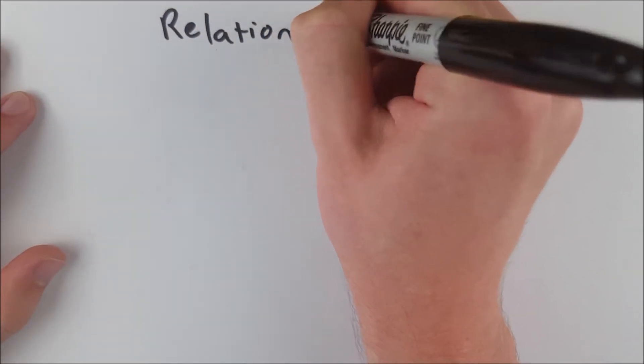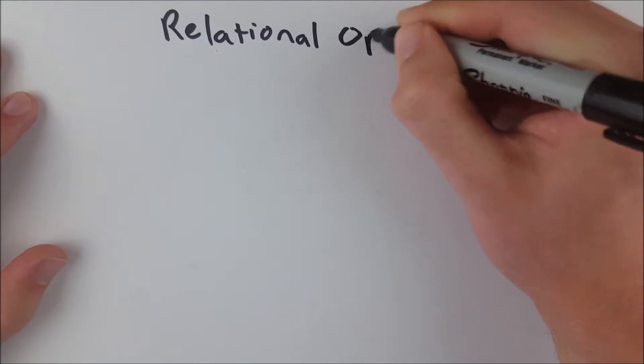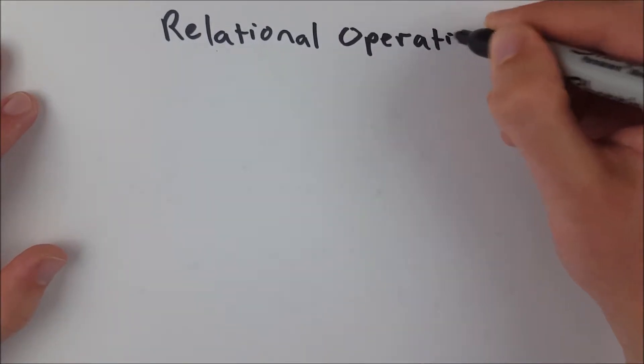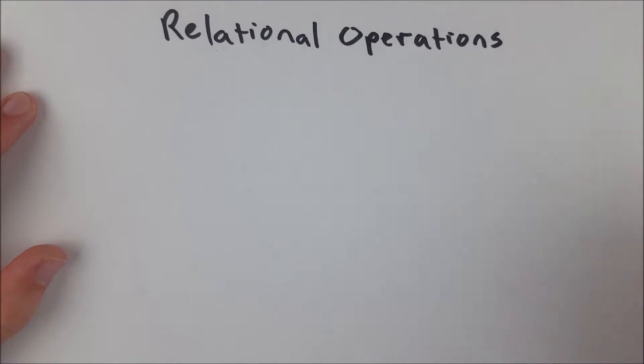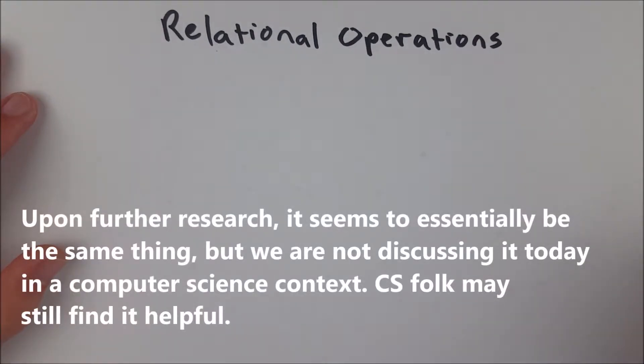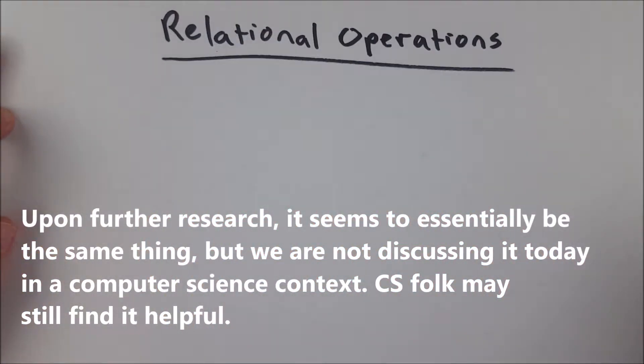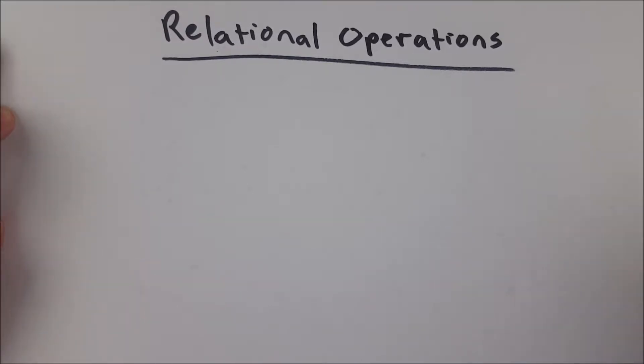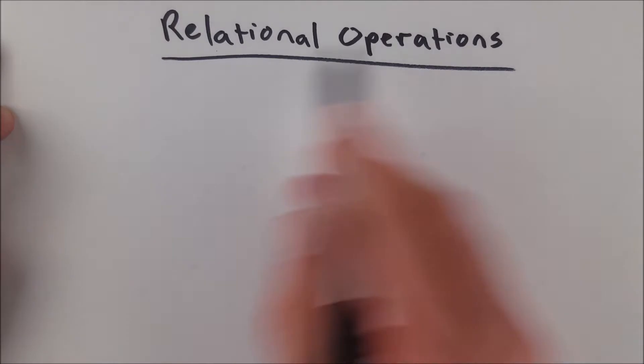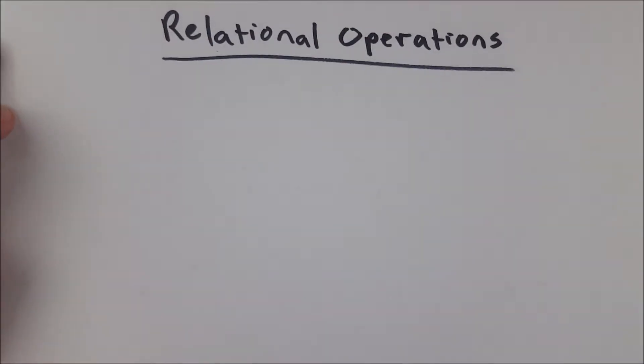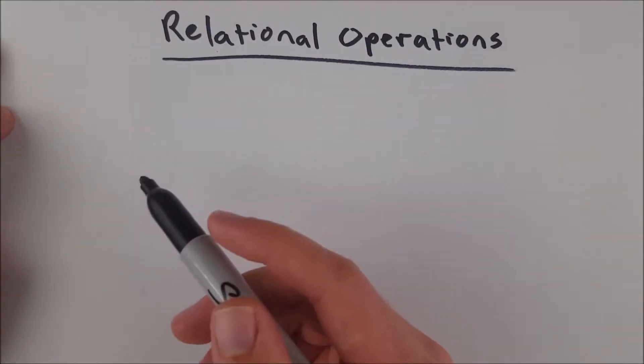And a quick disclaimer, if you are here to figure out what relational operations are as they pertain to computer science, I have no idea. So I would look elsewhere. We are talking about relational operations in mathematics. Perhaps you'll still find this helpful if you're a computer science guy, but I don't know if you will because I don't know what you are looking for in particular. But I know this has some presence in computer science and I know that I don't know what it is. So I can't tell you about that.